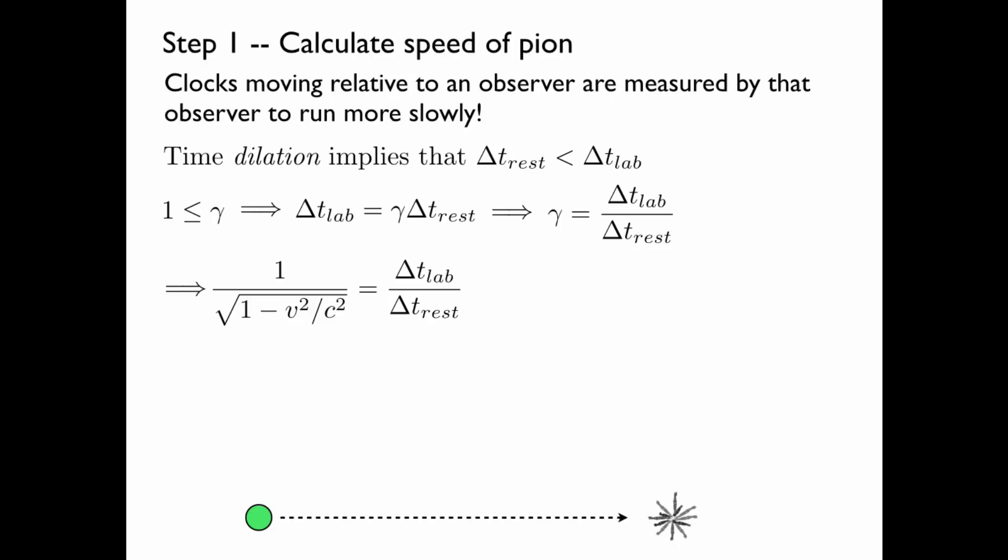At the end, we'll plug in our numbers. So, the first step will be to take the reciprocal of both sides, and then we'll square both sides to get rid of that square root.